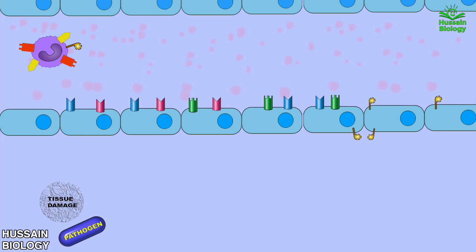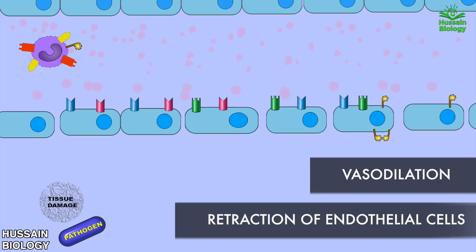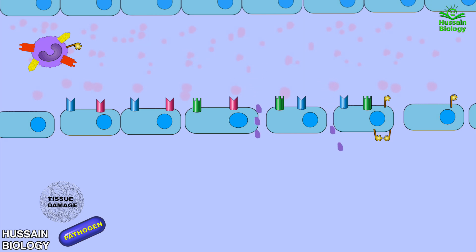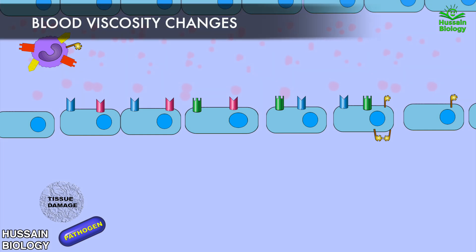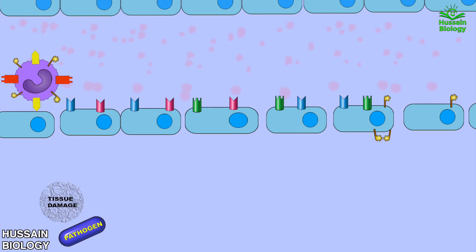From the release of these immune chemicals, we get vasodilation. We also have retraction of endothelial cells by histamine, as shown in the animation — the endothelial cells retract and open up gaps. Due to this retraction, plasma proteins leak out of the blood, disturbing the linear flow. This causes changes in blood viscosity, slowing of blood, and ultimately mediates the margination of leukocytes towards the walls of the blood vessel.